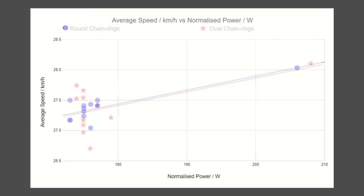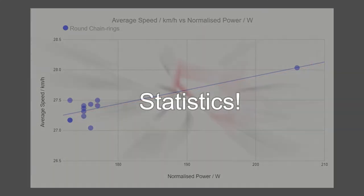This graph may be enough to persuade many of you that the speed you can attain has nothing to do with the shape of the chainrings, or at least the chainrings that I was using. Let's look into this in a bit more detail.